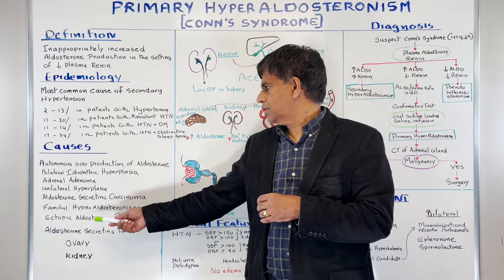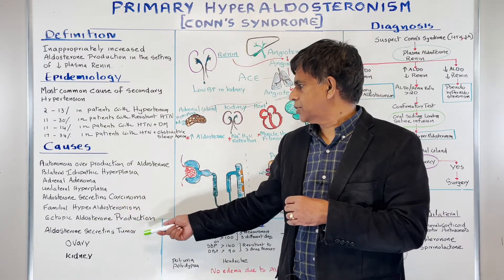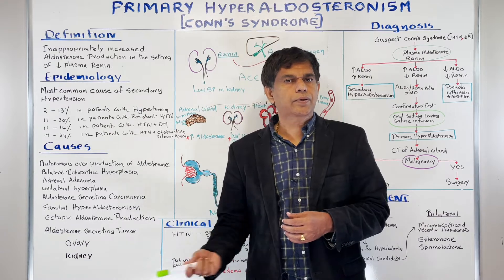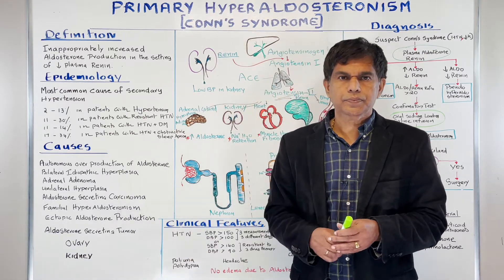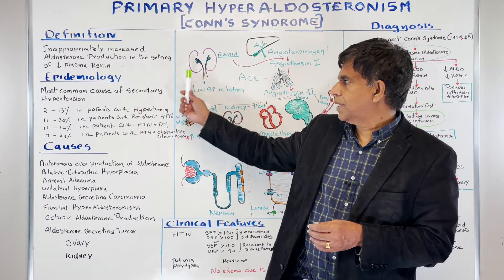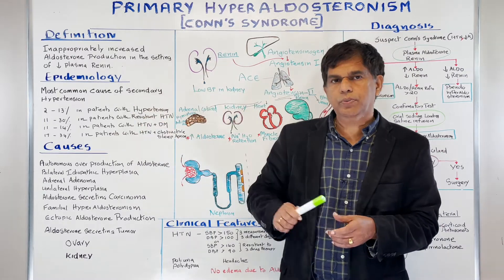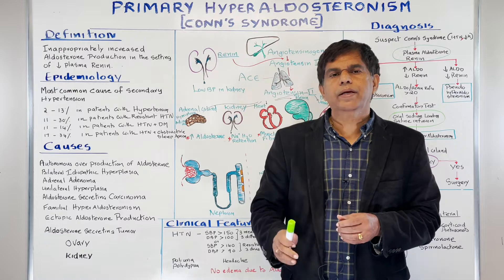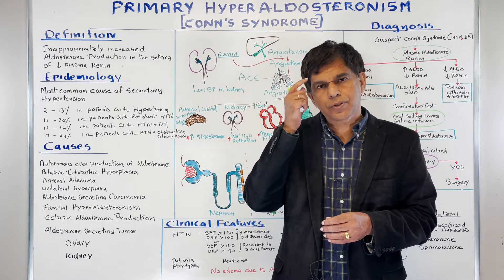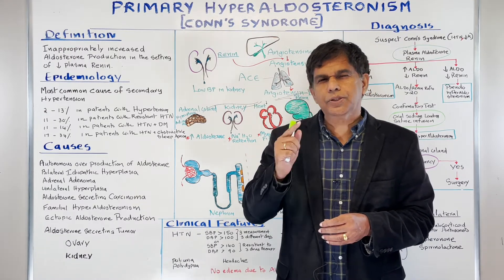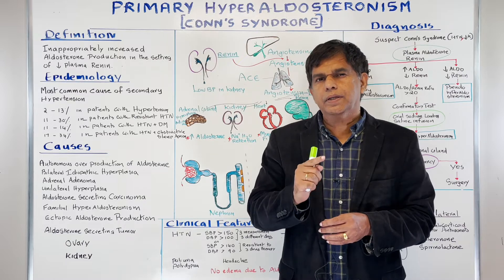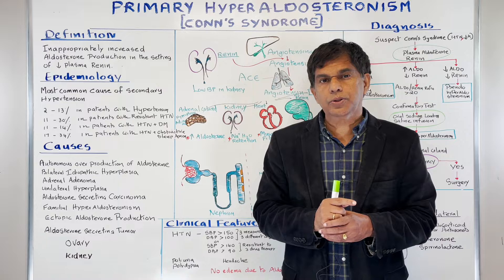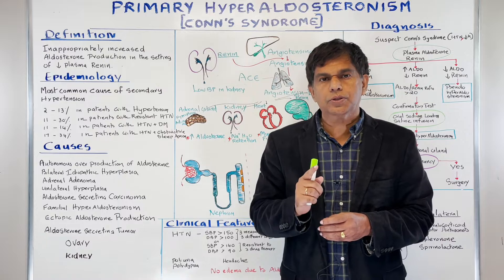Other causes include ectopic aldosterone production from aldosterone-secreting tumors, which could be on the ovary or kidney. The most important point is: when somebody has high blood pressure, the first thing you should ask is whether this patient meets the criteria for screening for primary hyperaldosteronism or Conn's syndrome.